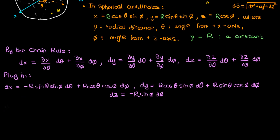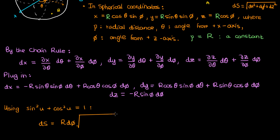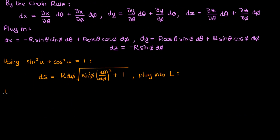Let's plug all this into the expression for ds. There's going to be a bunch of algebra involved, but ultimately we can show using the sine squared plus cosine squared equals one identity that in spherical coordinates we can write ds as R times d phi times the square root of sine squared phi times (d theta by d phi) squared plus one. Now let's plug this into our functional L. The phi_a and phi_b are the angular coordinates of points A and B respectively.